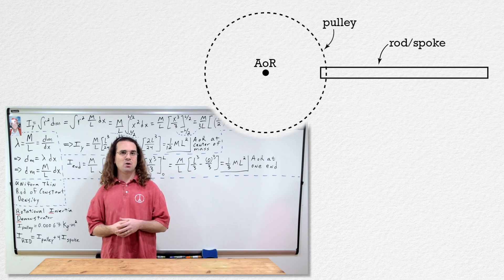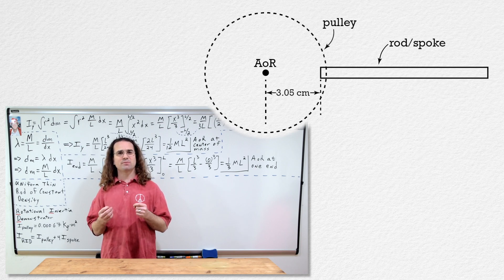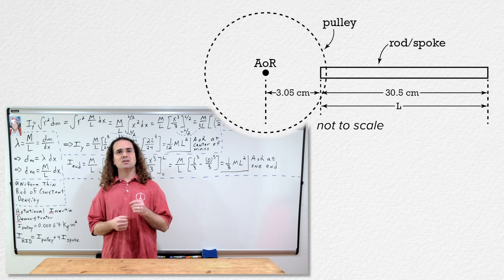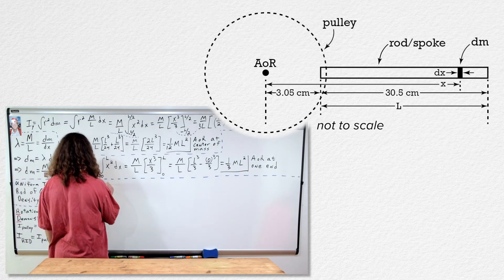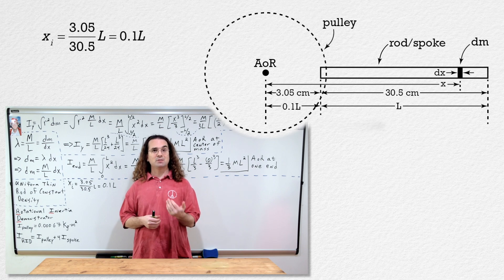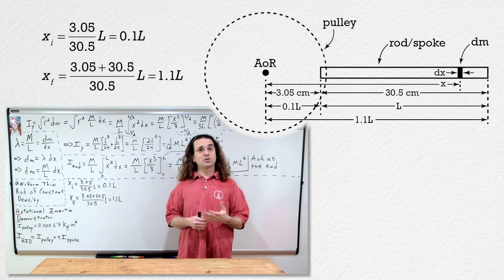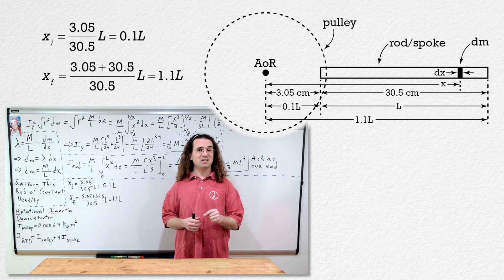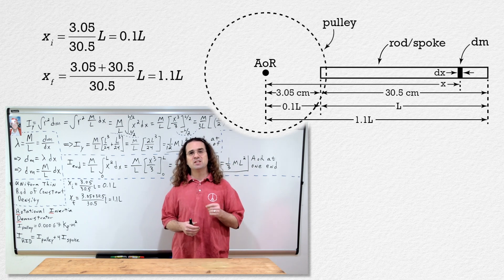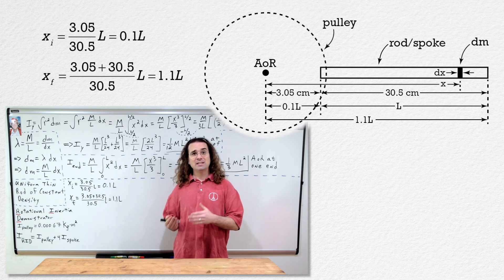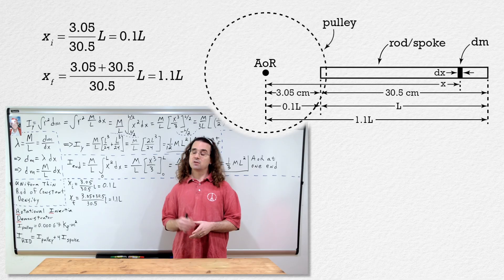The rod screws into the pulley a small distance and the inner end of the rod ends up being 3.05 centimeters from the axis of rotation. The length of the rod is 30.5 centimeters. That means the initial position of the rod as a fraction of the length is 3.05 divided by 30.5 times L, or 0.1L. The final position is (3.05 + 30.5) divided by 30.5 times L, or 1.1L. So we go back to our integral and solve it using these new limits. Bo, please do that.